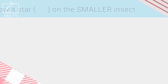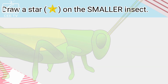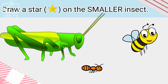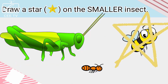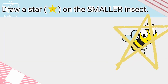Draw a star on the smaller insect. Very good! The bee is the smaller insect.